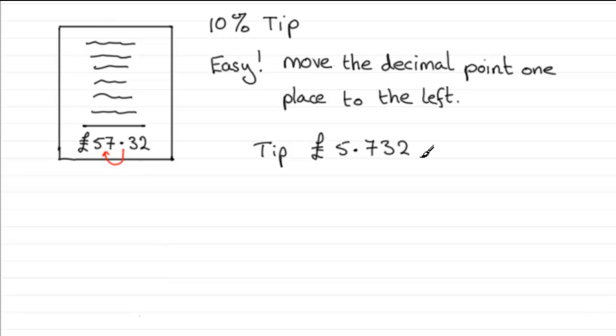But that doesn't seem to make much sense. We only have two digits behind the decimal point in money, so we need to ignore the two. So what do we get? What are we going to give then? We're going to give, ideally, £5.73. But you might want to give a little bit more, £5.75, £5.80 maybe, or a little less. It's up to you.